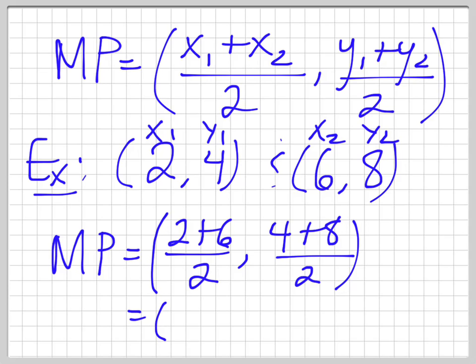So we have 2 plus 6 is 8, divided by 2 is 4. 4 plus 8 is 12, divided by 2 is 6. So the point that's exactly between these two points is 4, 6.